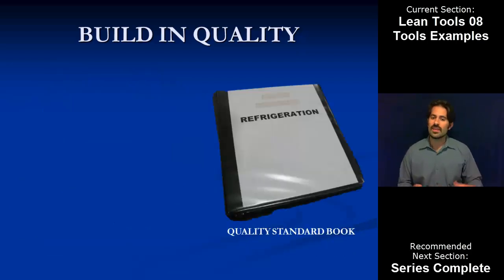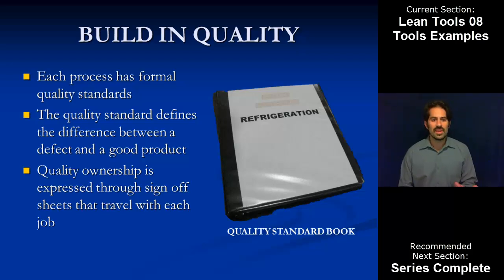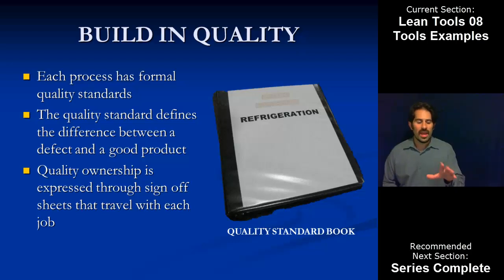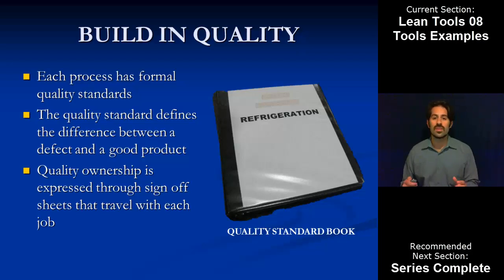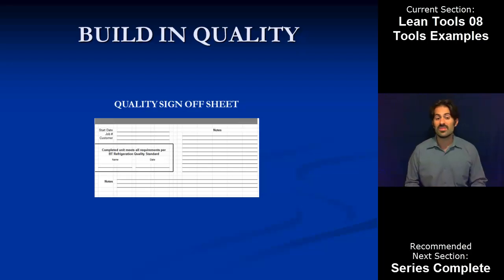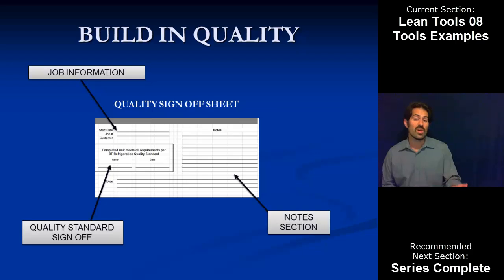One of the easy, simple, straightforward tools to build in quality is a simple quality standard. At each process, you have a written, documented standard for what is acceptable and what's not — normal and abnormal. That difference becomes the definition between a good product and a product with a defect. It's objective and written, so everyone can understand what we're looking for. To build in some accountability, quality ownership is expressed through some form of sign-off sheet. The key thinking is that there is accountability confirming that this product did meet that quality standard. It could be as simple as a post-it note — just what the job was, someone verifying the quality standard was met, and any notes of value to management.